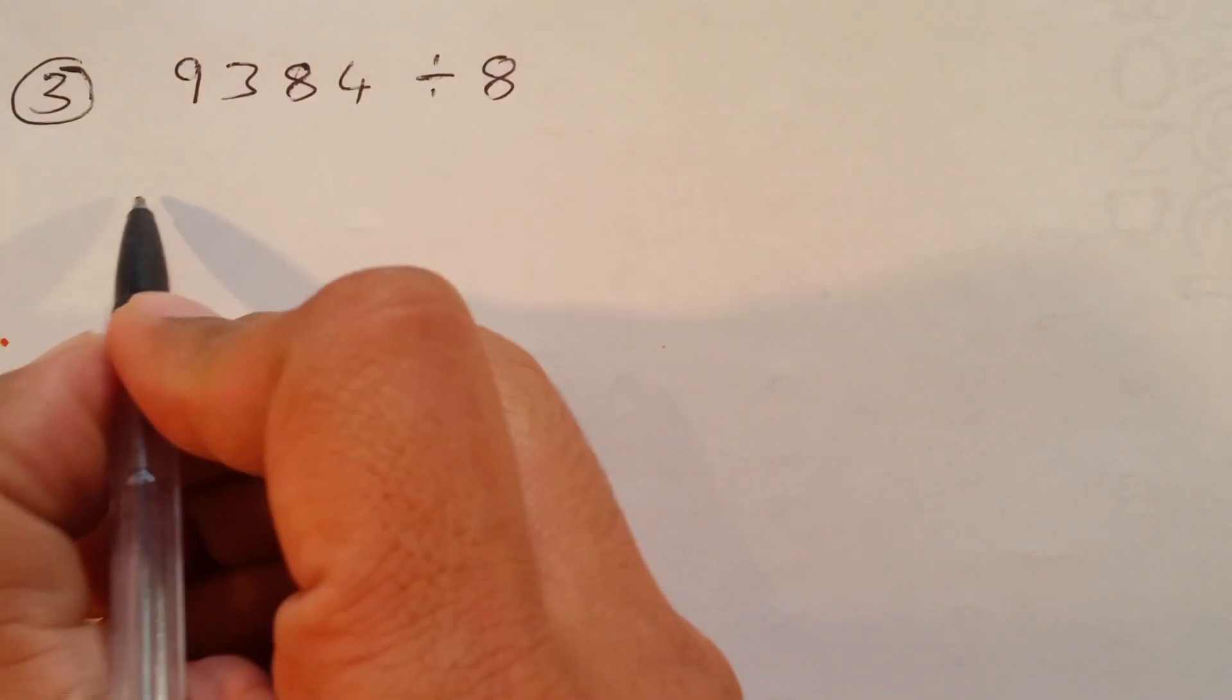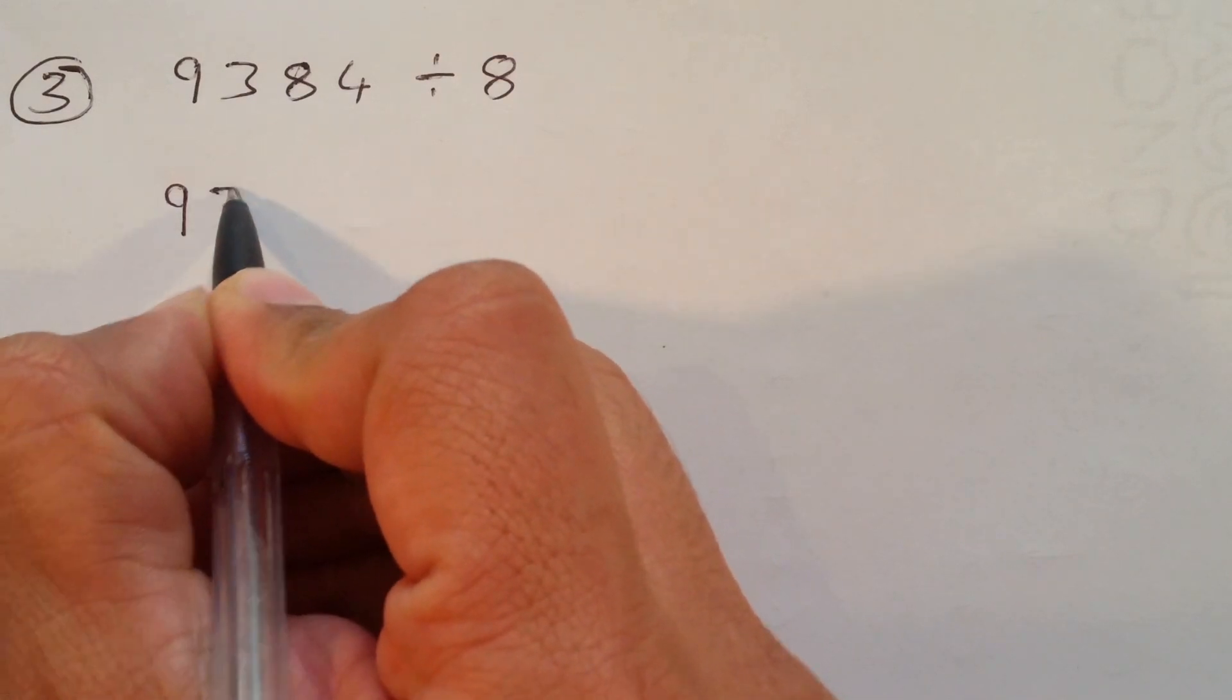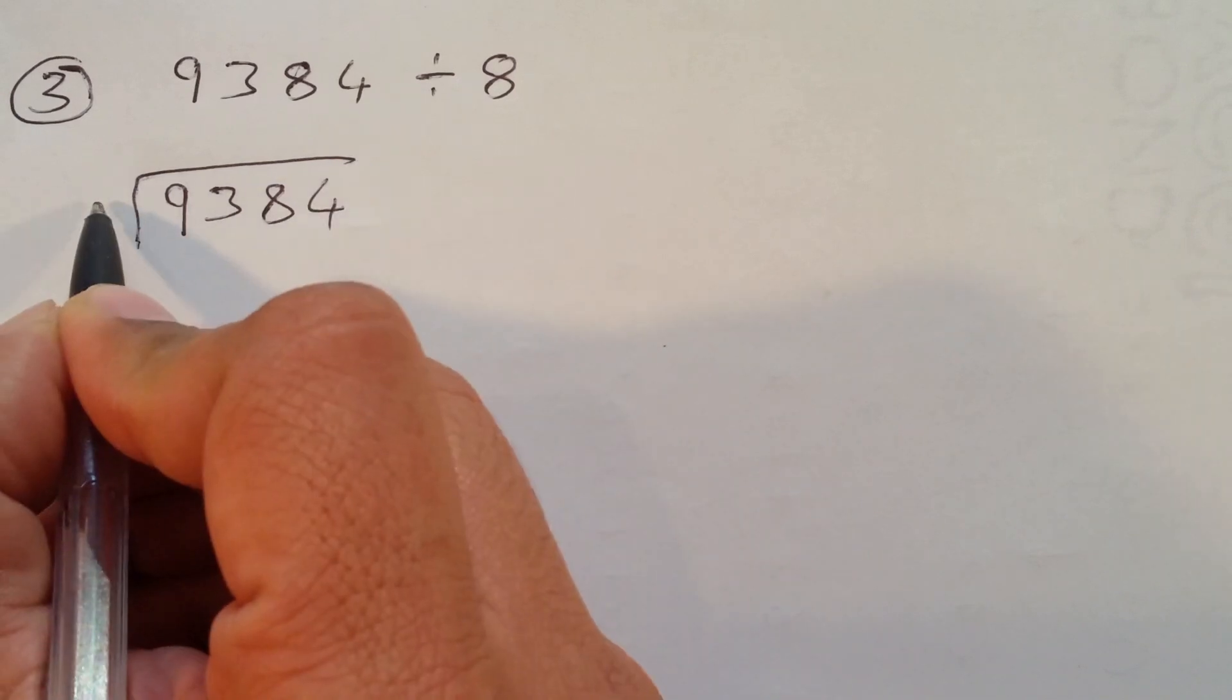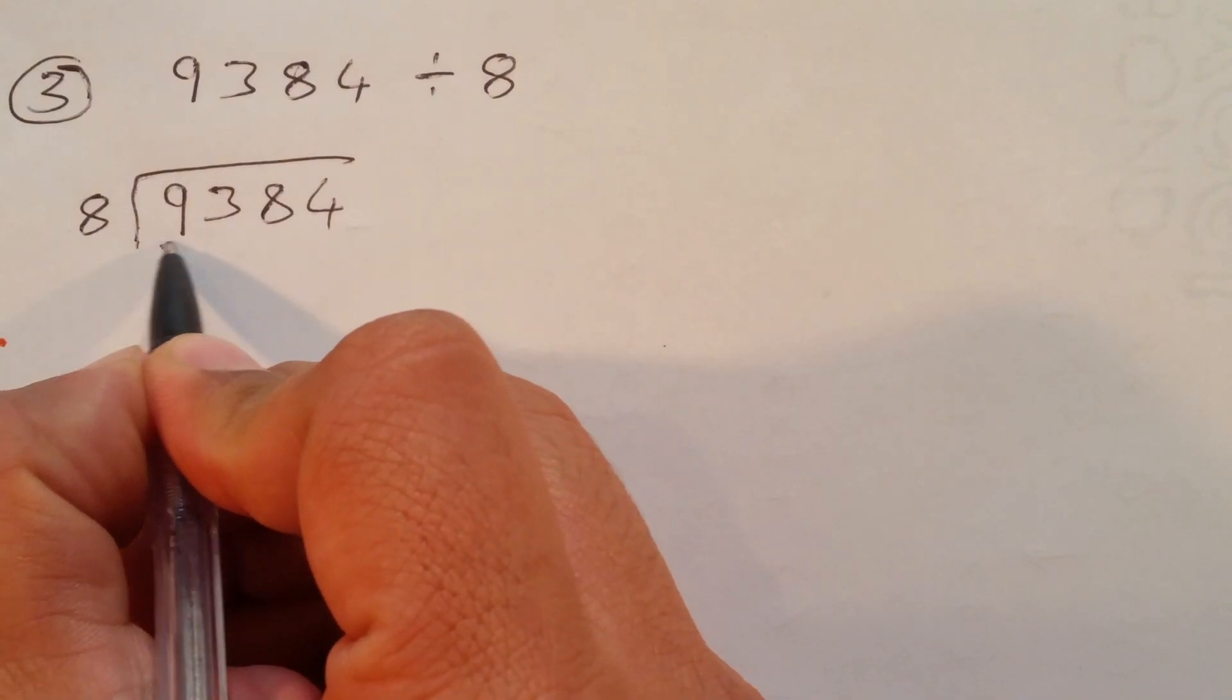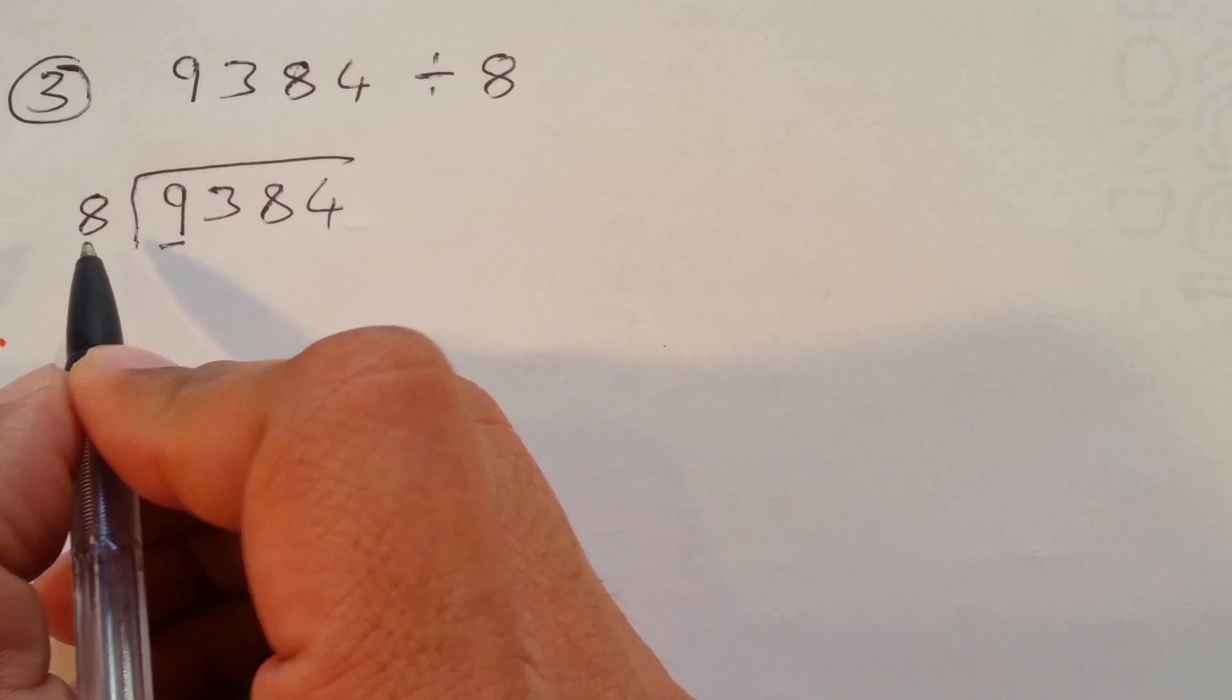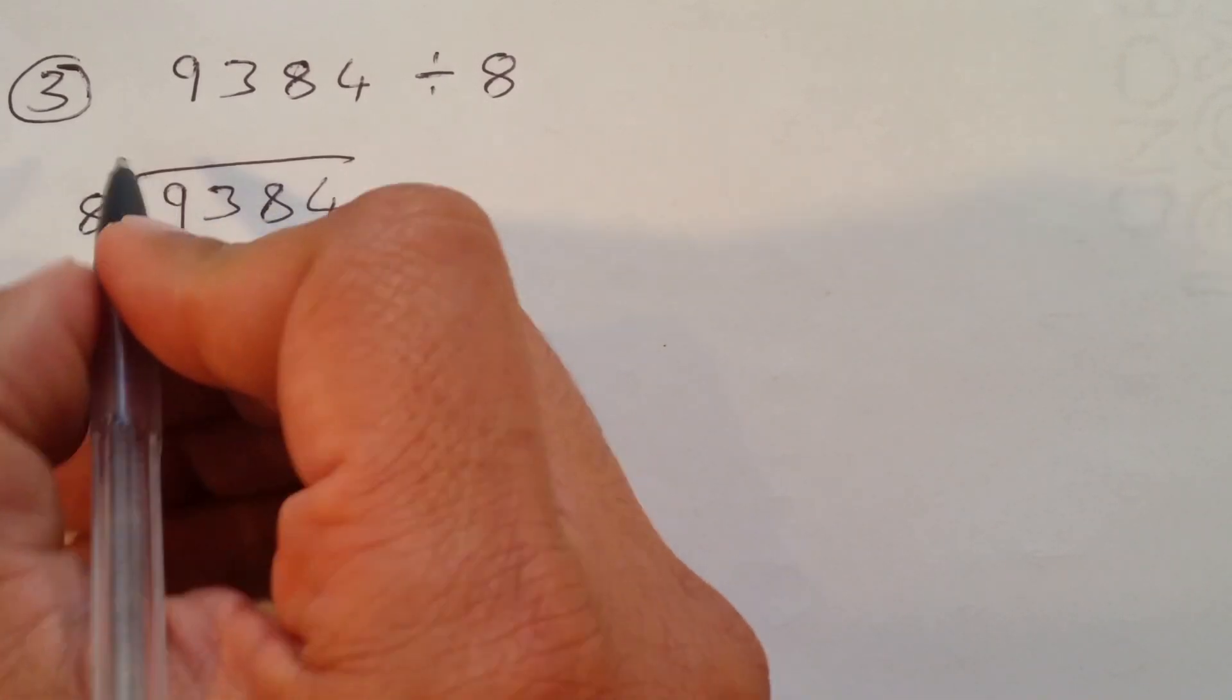So, they both are same. They both are easy. 4, 9, bus stop method I'm using, and divide by 8. So, we'll read 8 table till we get the first number. If the first number is bigger than that, we'll start with that number, bigger than this number.